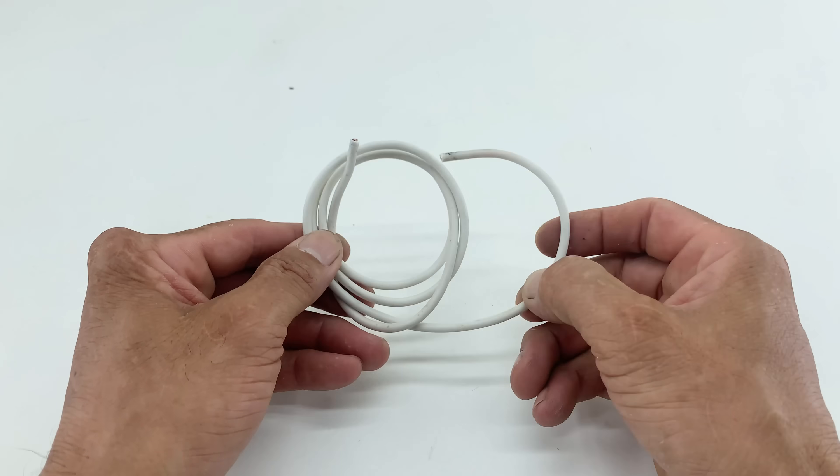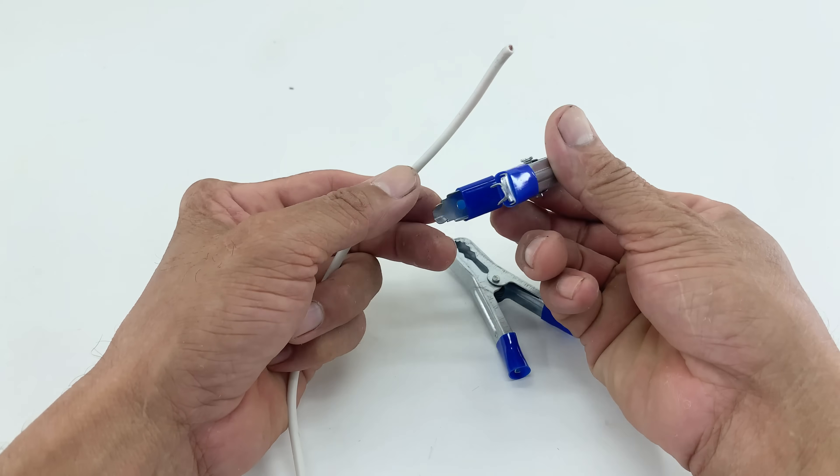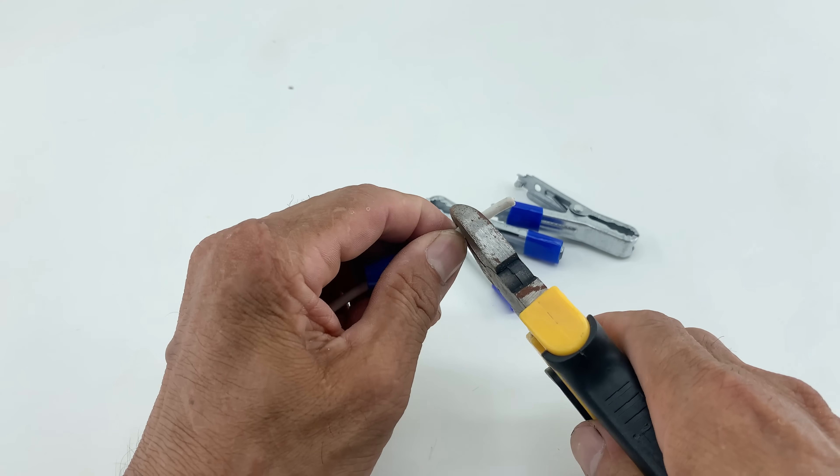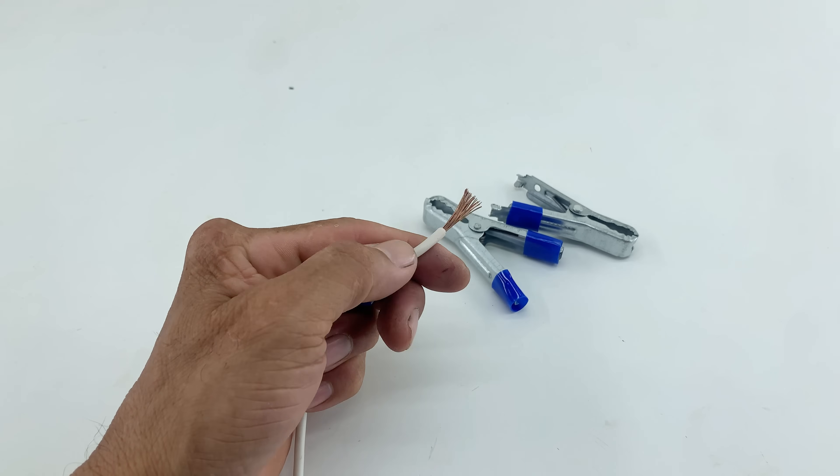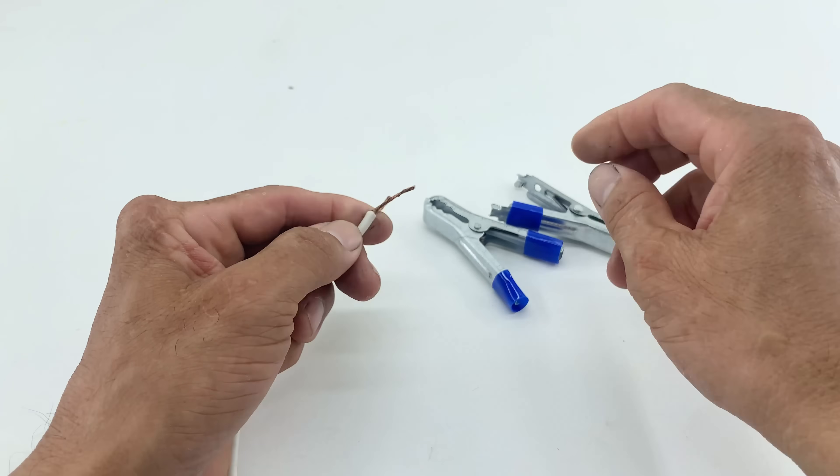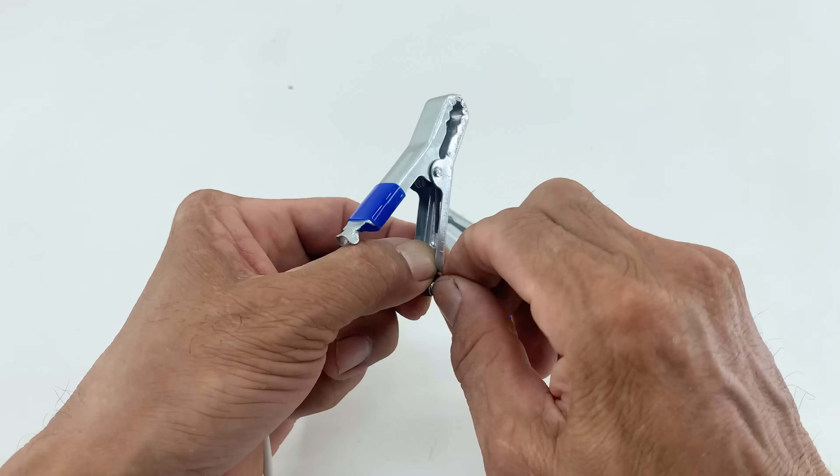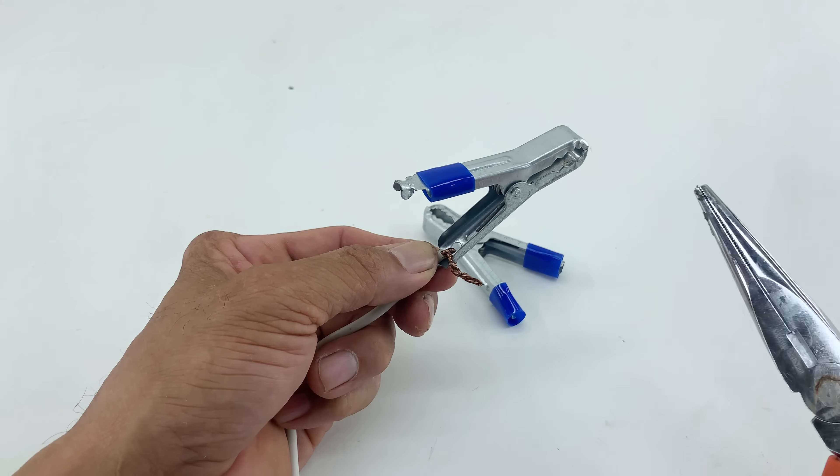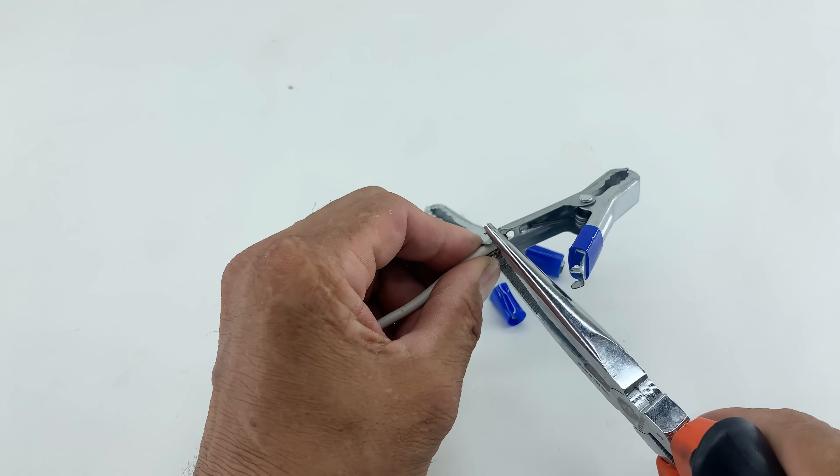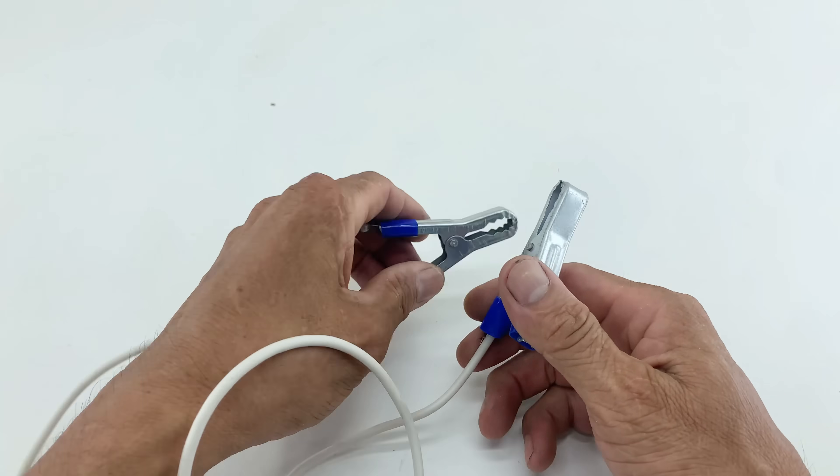To supply power to our device, I prepare a dedicated power cable. I begin by stripping the insulation from both ends of a white electrical wire, exposing conductive strands. These strands are then meticulously twisted and folded back to create robust connection points. Subsequently, I attach two blue-handled alligator clips to each end of this prepared white wire. Each connection is securely crimped using pliers, ensuring optimal electrical conductivity and mechanical stability. This completed cable will serve as our primary power connection to the battery, guaranteeing efficient energy transfer.